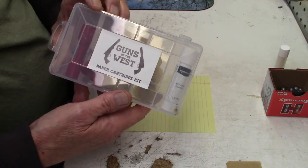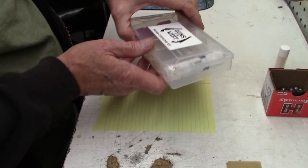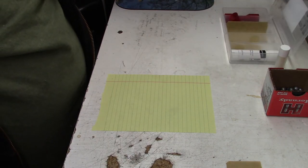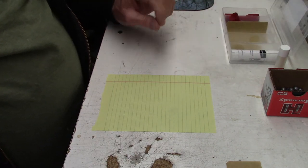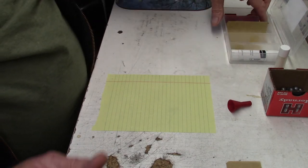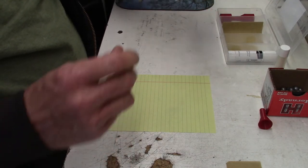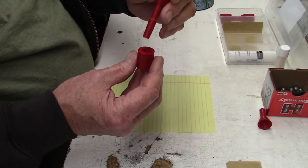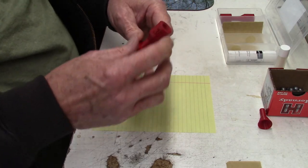He sells a kit which does 36 and 44 caliber. Basically, what he sells is a mandrel and a tapered cone thing for forming the papers.